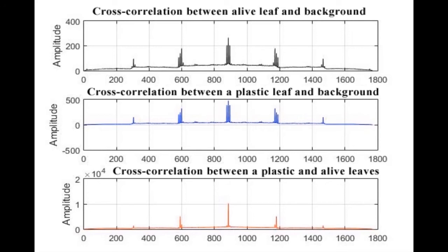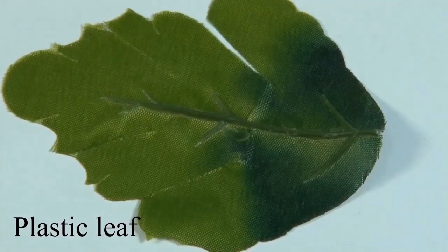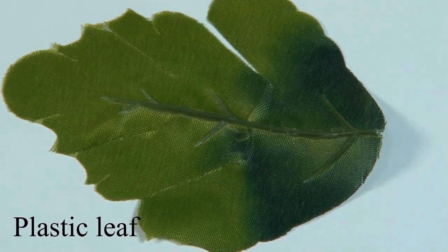To measure the similarity in color changes between the live leaf and the plastic leaf, we can see that the color changes of the plastic leaf are more similar to the background than the live leaf. There is a slight correlation between the color changes of both leaves, which may be due to the fact that they have the same color.